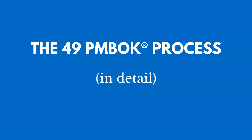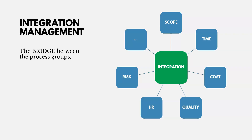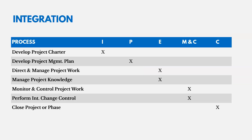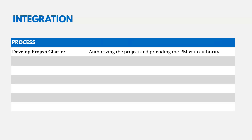Now let's talk about the 49 PMBOK processes in detail, going by knowledge area. We'll start with integration management, which is the bridge between the process groups — it brings everything together, it's the glue. There are seven processes in this knowledge area, spread across process groups. The develop project charter process authorizes the project and provides the PM with authority to get started and use resources.